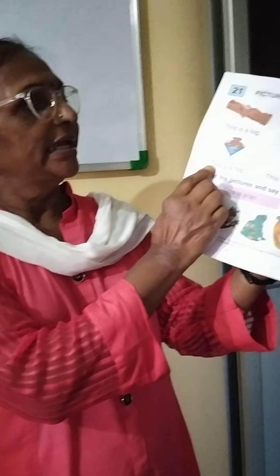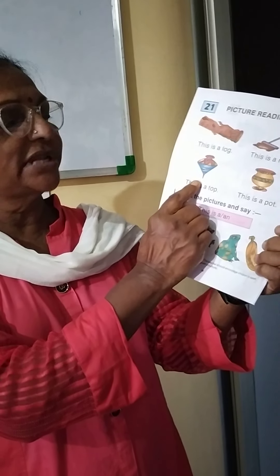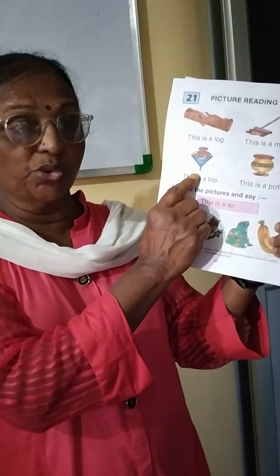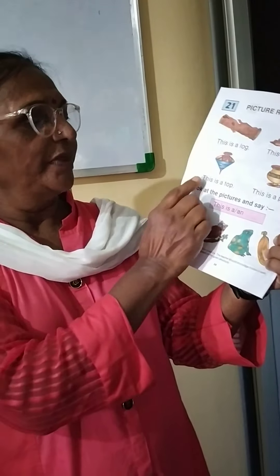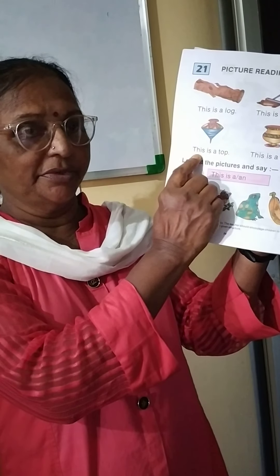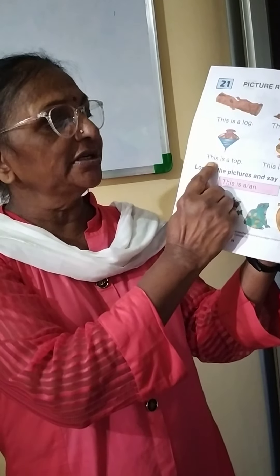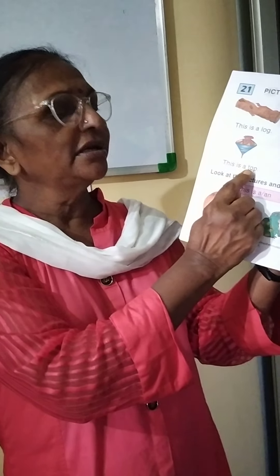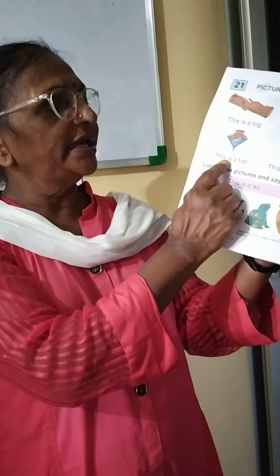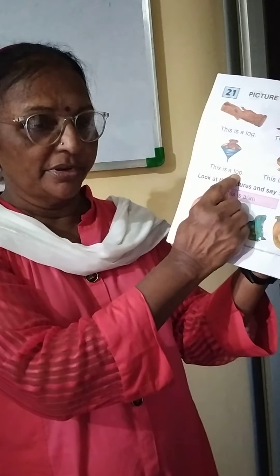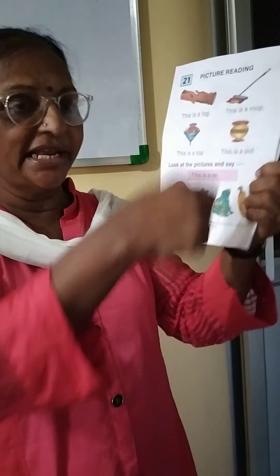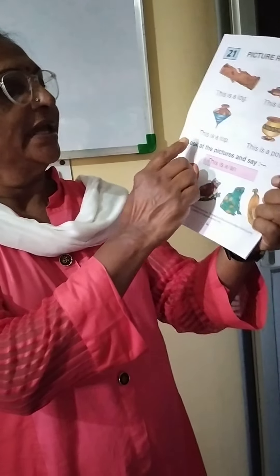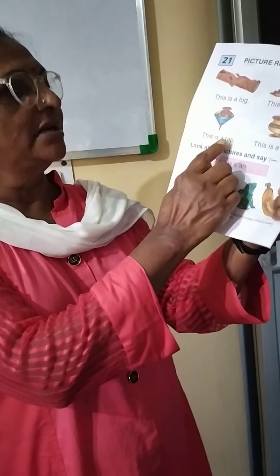Next one — what does it look like, children? It looks like a top — a spinning top. Now keep your right hand index finger below each word. This is a top. You use a little twine, roll it around the top, and then spin it like this. This is a top.